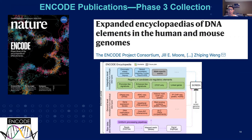Most recently, the ENCODE phase 3 consortium members published a collection of papers in the July 30th issue of Nature. This features 14 publications in Nature and other major journals. This is a way to share what the program has been generating and also provide information for others who use it in their research studies. These papers actually contribute to over 500 ENCODE consortium publications produced to date.